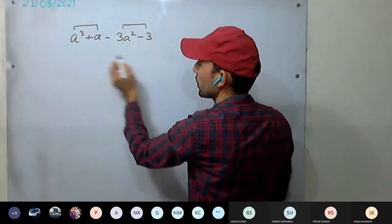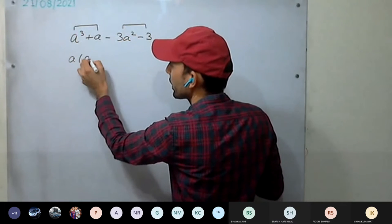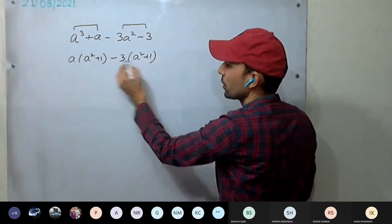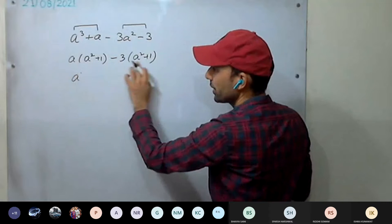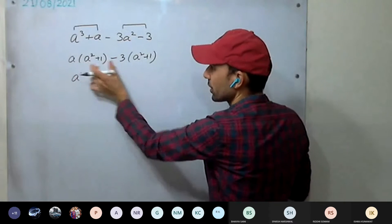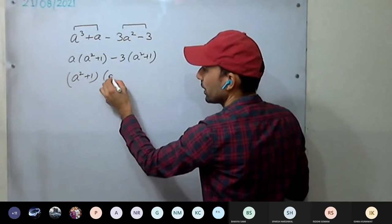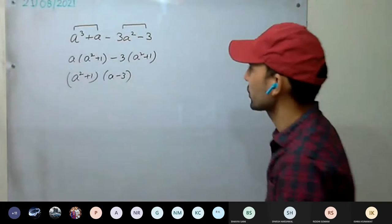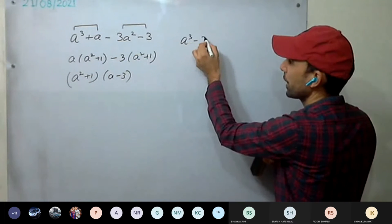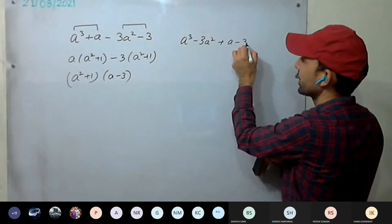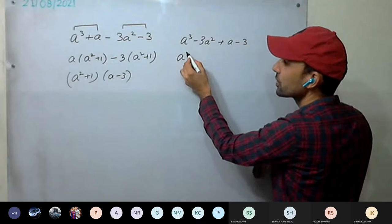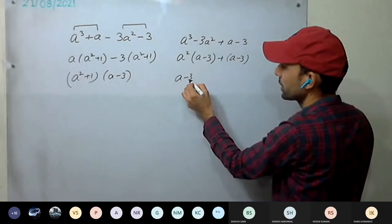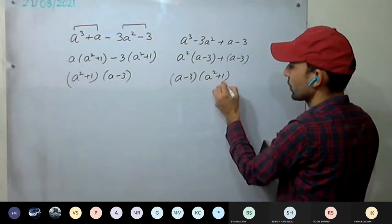After grouping: a(a²+1) − 3(a²+1). Now (a²+1) is common between both terms. Taking it out: (a²+1)(a−3). Alternatively, grouping first and third (a³−3a²) plus second and fourth (a−3): from the first pair a² is common giving a²(a−3), from the second pair 1 is common giving 1(a−3). Then (a−3) is common, giving (a−3)(a²+1) — the same answer.